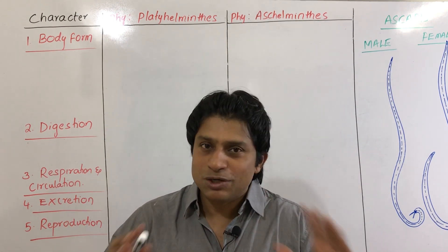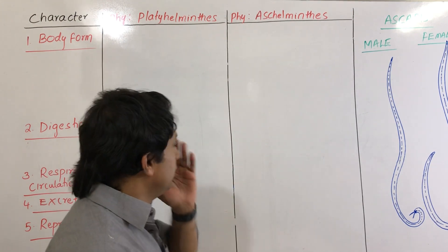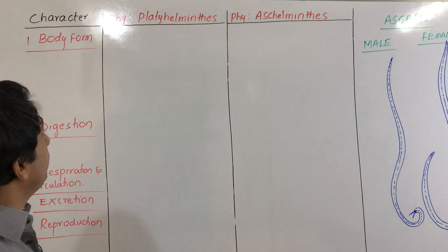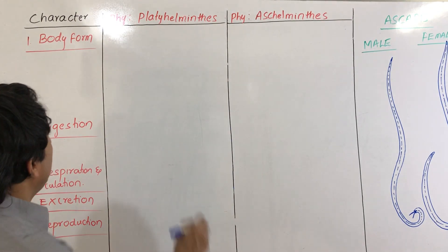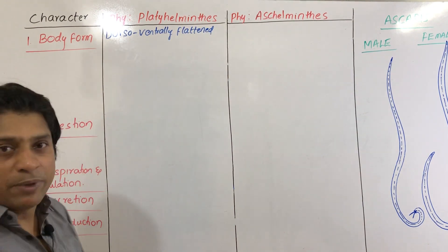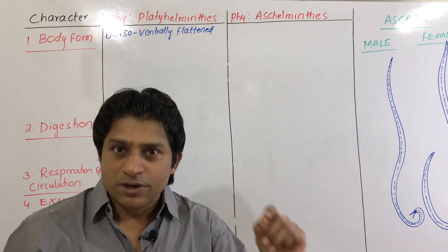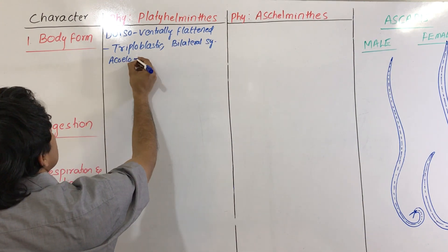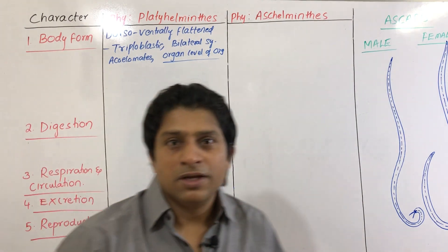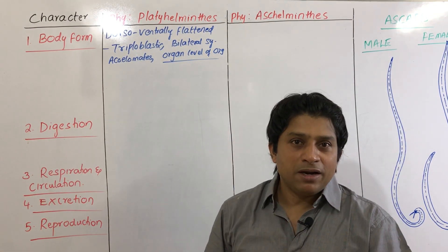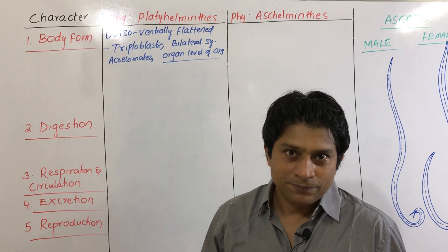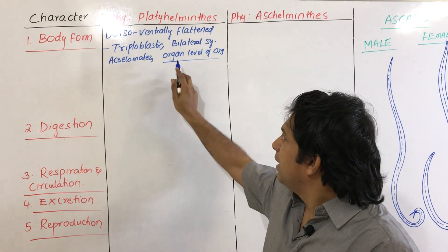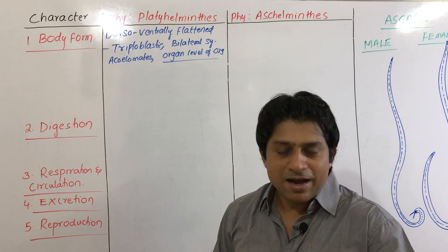Starting with phylum Platyhelminthes — they are so called because these animals are dorsoventrally flattened, so we call them flat worms. This is the first triploblastic phylum in the animal kingdom, with bilateral symmetry. They do not have any coelom — they are acoelomates — with organ level of organization.